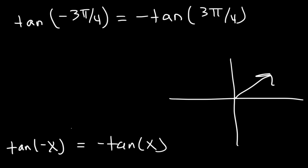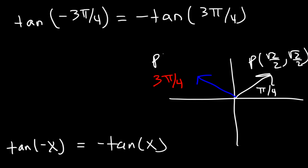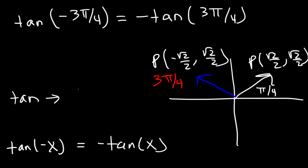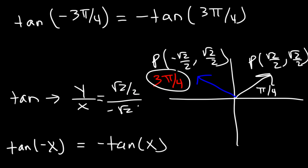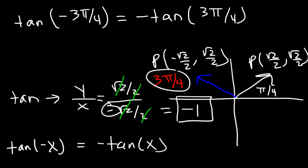At π/4 we have the point (√2/2, √2/2). Now at 3π/4, which is in quadrant 2, we have a similar point but only x is negative and y is positive. Tangent is y divided by x, so at 3π/4 we have (√2/2) divided by (−√2/2). These cancel to give −1, so tangent of 3π/4 is −1. But negative times negative gives a positive value, so tangent of negative 3π/4 is positive 1.